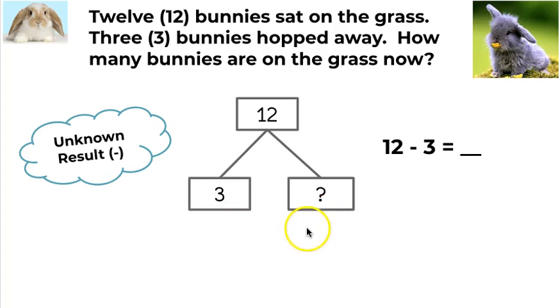Well, I can either know my facts, twelve minus three, and if I know that, that's great. And if not, one strategy I can use is to start with one part and count up to the total. You'll always be able to start with the part, whichever one you have, and count up to get the total, and that will give you the other part.